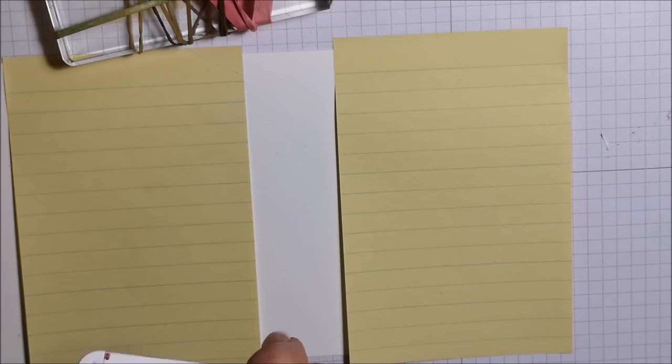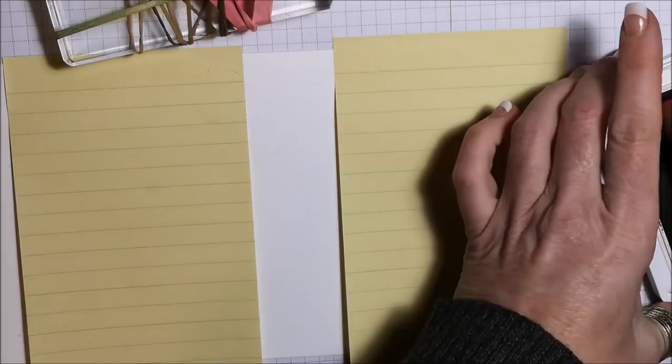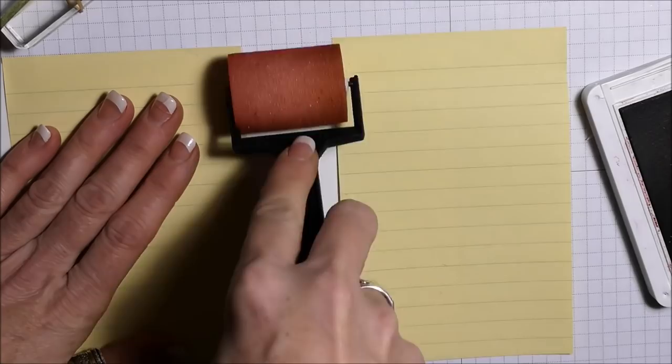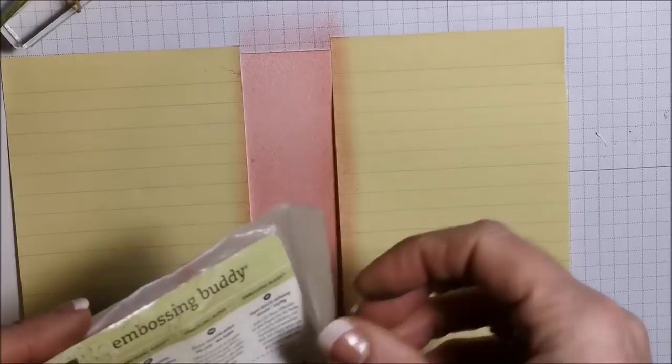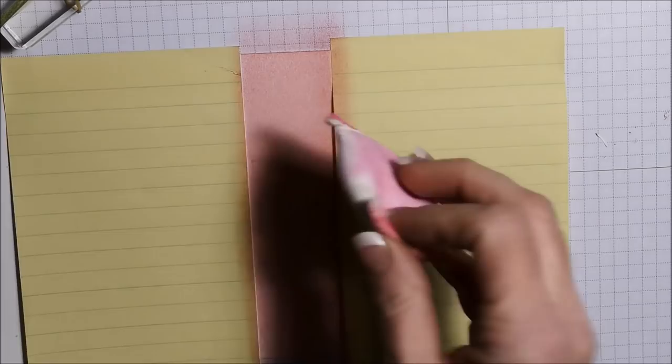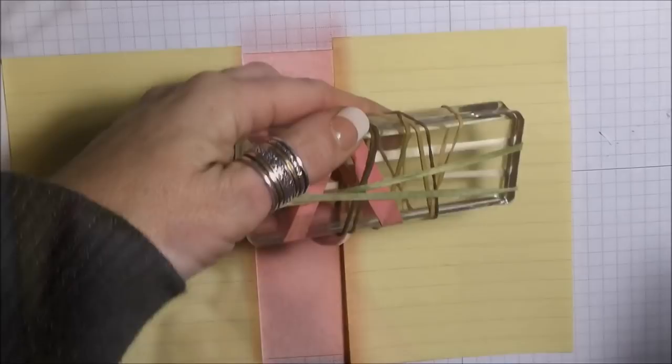I'm going to use Rococo Rose. And just sponge it on. I love Rococo Rose. Now I'm taking my embossing buddy because I'm going to use Versamark on those rubber bands. So I'm just tapping all over this open area. All right. Ink this up.